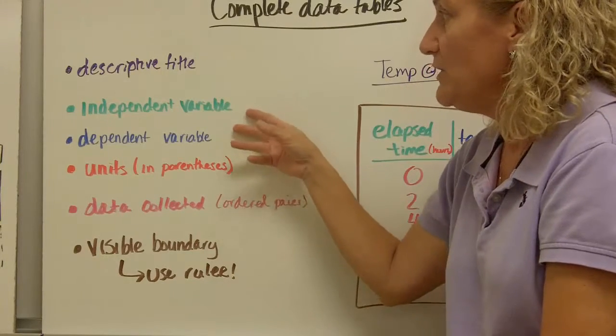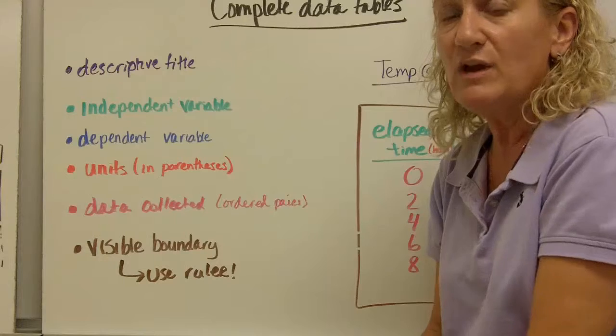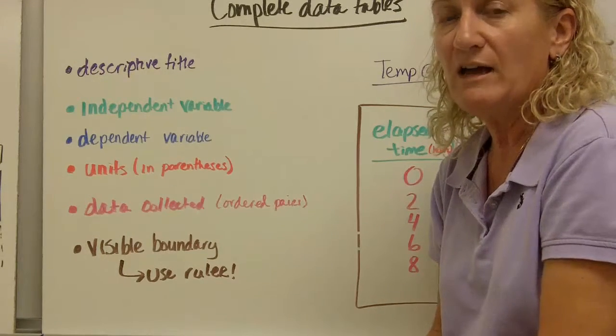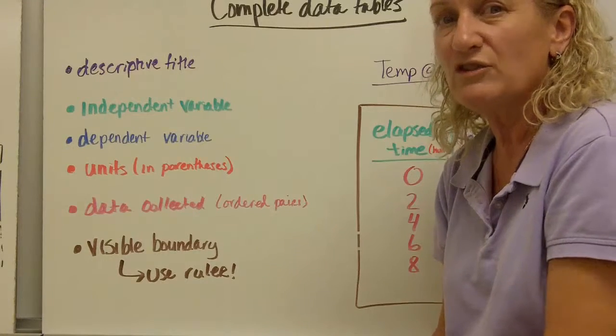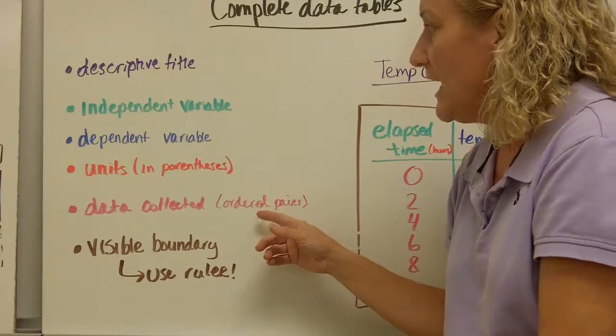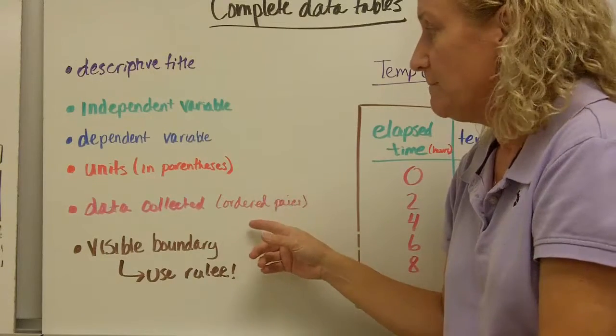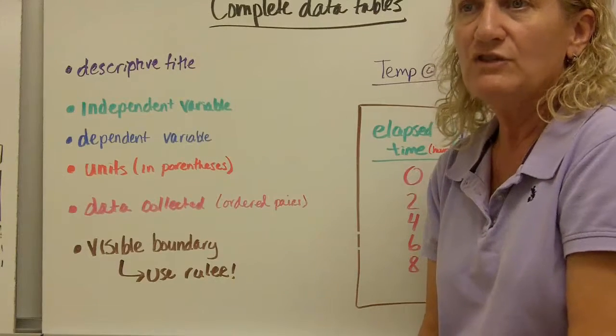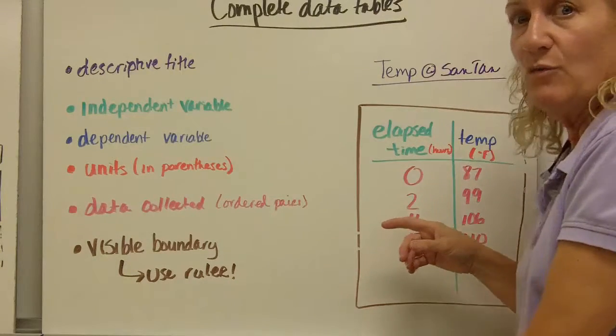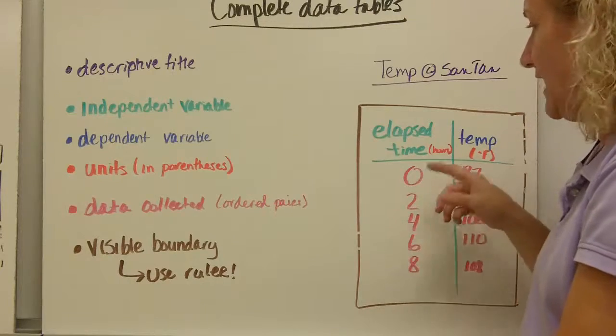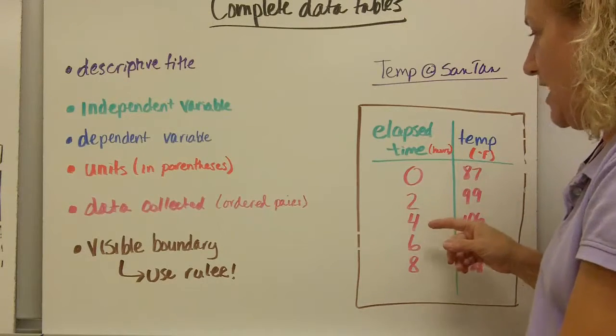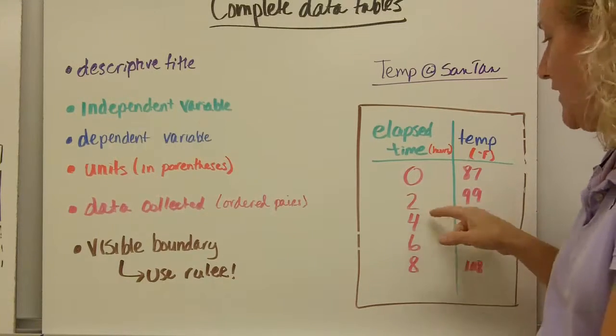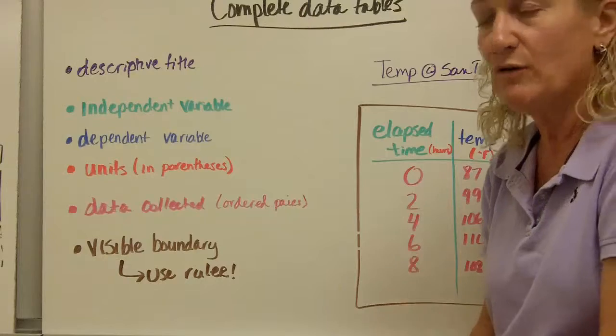Then we need units for both the independent and the dependent variable. So if you say three, I don't know three what unless you tell me it's three minutes or three pieces of pie or three students. Otherwise, I'm not sure what that three stands for. And the units need to be in parentheses. You need to have your data collected and it needs to be presented in ordered pairs. So for instance, for our example, we took the temperature at Santan over the course of eight hours. But let's say we forgot to go out at 4 o'clock and take a reading and we had no temperature. That 4 o'clock data point would simply go away because it was no longer a pair.